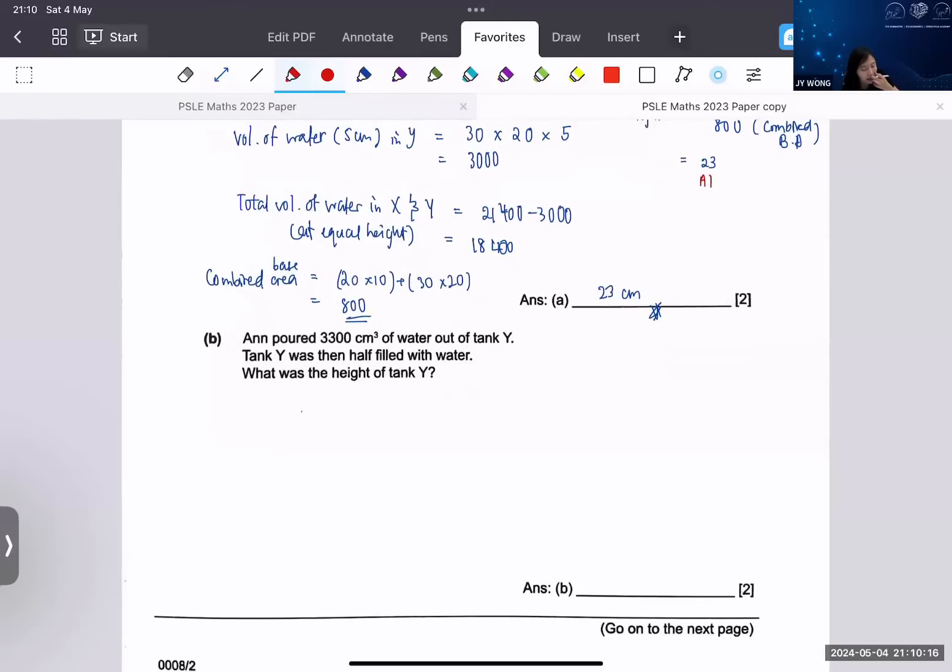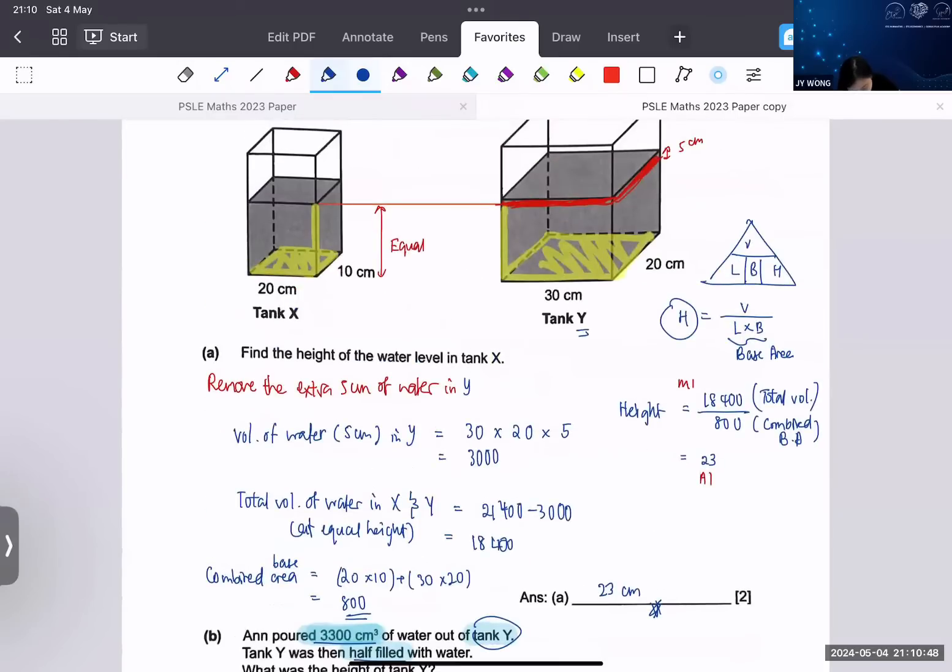Now next part - Ann poured 3,300 cubic centimeters out of tank Y, then tank Y was half filled. So that means after you take out water from tank Y, this amount of water is actually half of tank Y. Let's find out what's half of tank Y.